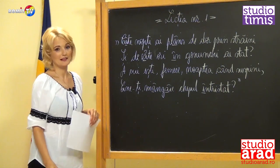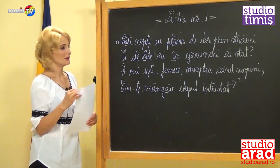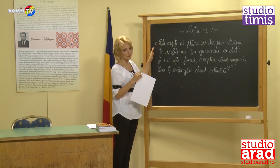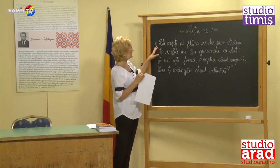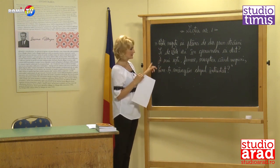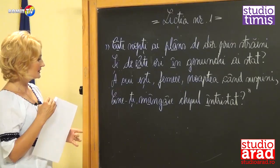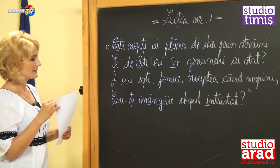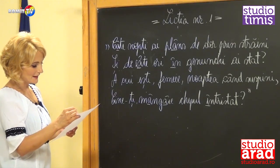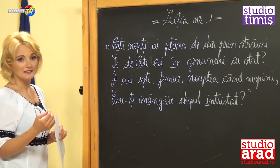I hope everyone wrote as I wrote. Notice that here we have no problems — we have no exception to the rule at all. We have only Î from A in the interior of words, and at the beginning — in this case only at the beginning — words written with Î from I. Let us write two proverbs now.